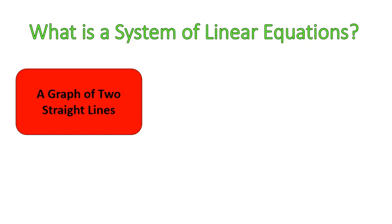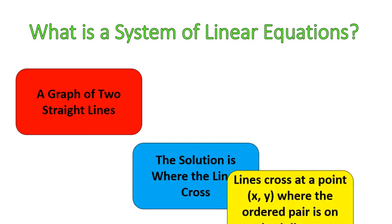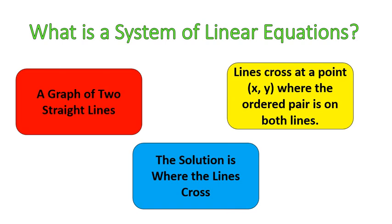We've seen this before in previous lessons. The system of linear equations, in our case, we're going to be graphing two lines, two straight lines, and the solution is the point where the lines cross. So the lines cross at one point, x, y, where the ordered pair is on both lines. In other words, that point x, y is the same for both equations, usually if they're crossing at one place.